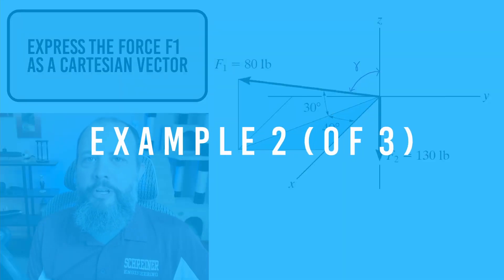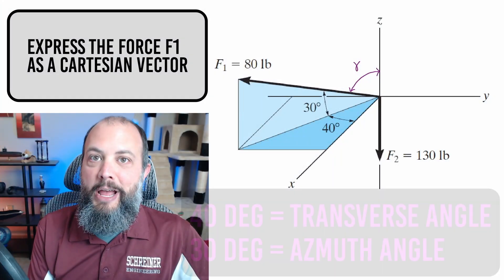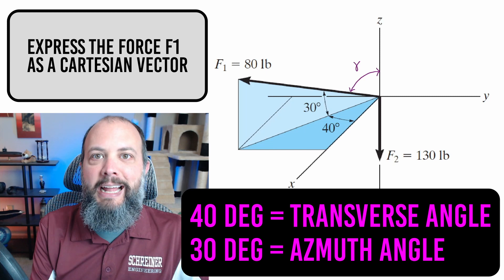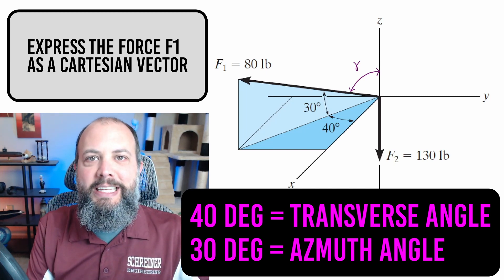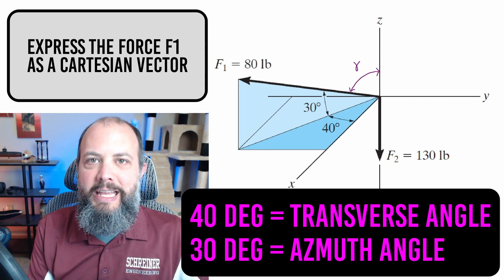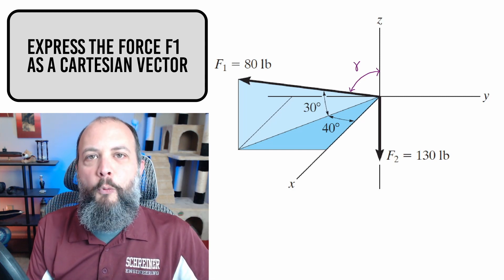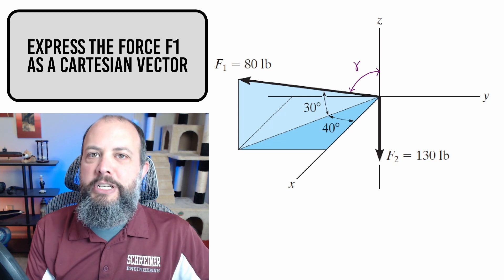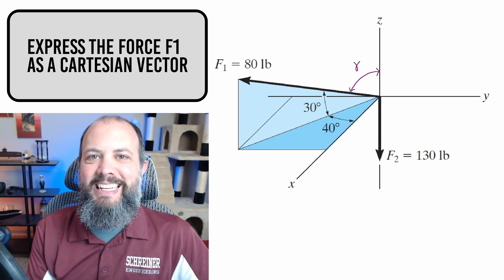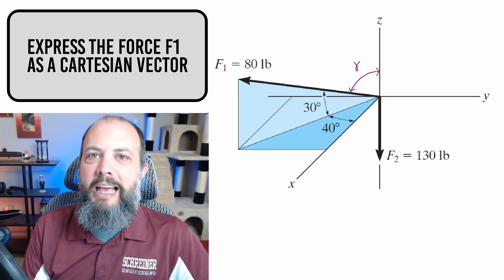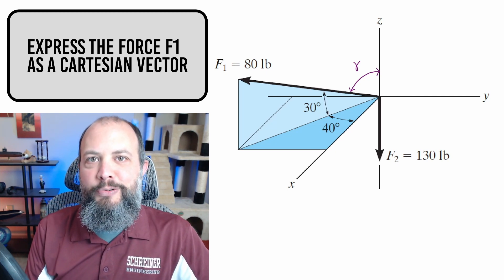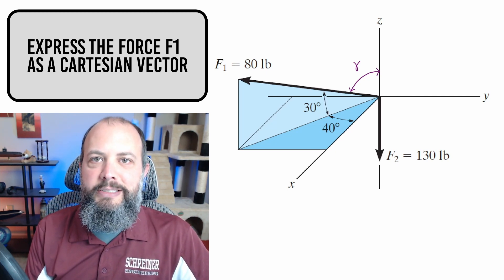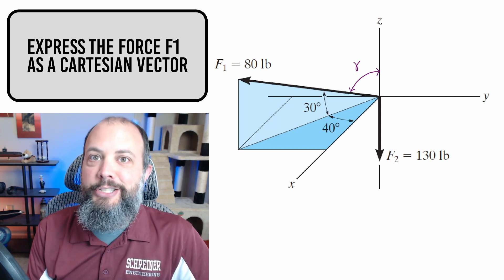In this angle, the 30 and 40 degree angles are not coordinate direction angles. The 30 degree angle is going to be related to gamma. 90 minus gamma will equal that 30 degree angle. But the 40 degree angle is within the X, Y plane. So in order to turn F1 into Cartesian form, we're going to first need to project it from 3D space into 2D space in the X, Y plane. Then we'll be able to use that 40 degree angle with sine and cosine to figure out X and Y components. Although the Z component is going to be the easiest, so we'll do that one first.